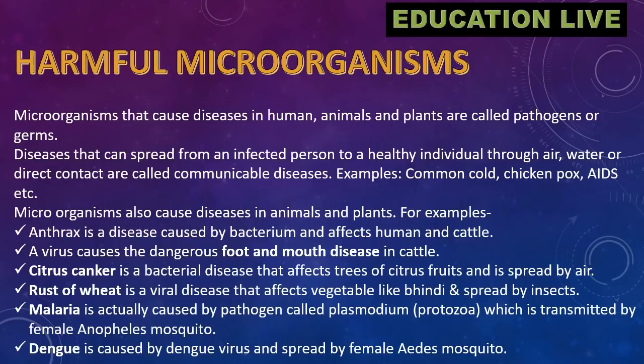Rust of wheat is a viral disease. Malaria is caused by a pathogen called plasmodium, a protozoan, which is transmitted by the female Anopheles mosquito. Dengue is caused by the dengue virus and spread by the female Aedes mosquito.